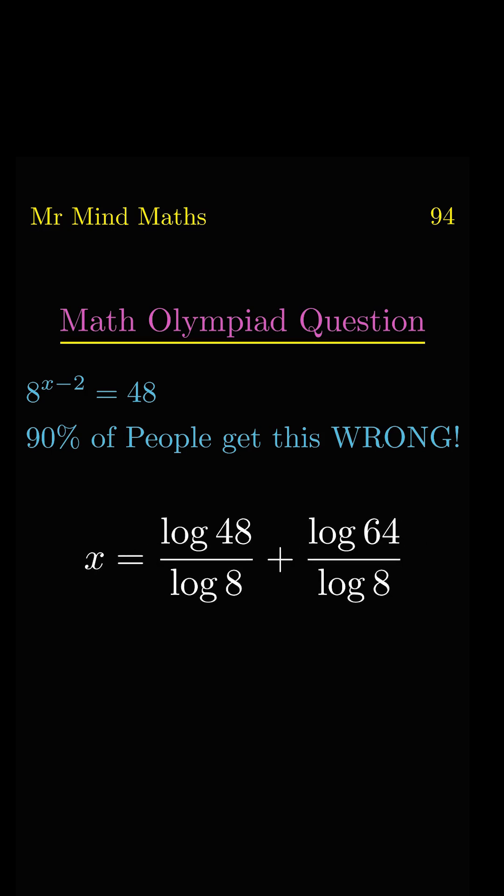Now log 8 will divide to the right side. 64 will convert into 8 squared. Here again, the power will shift to the coefficient of log 8. Now log 8 will get cancelled with log 8, and 64 will convert into 6 times 8.